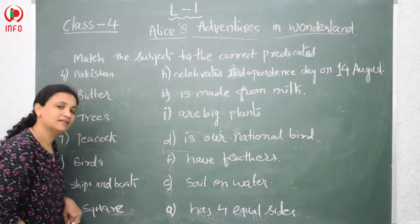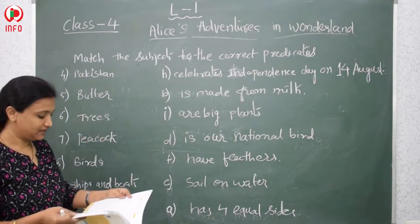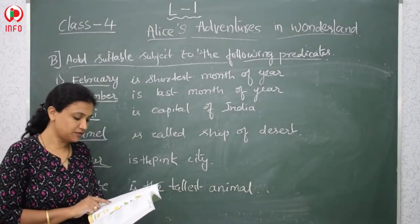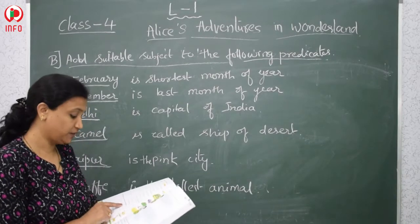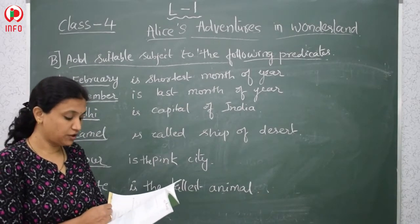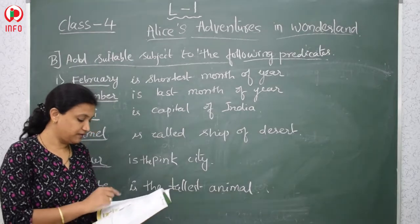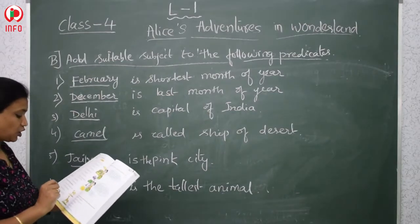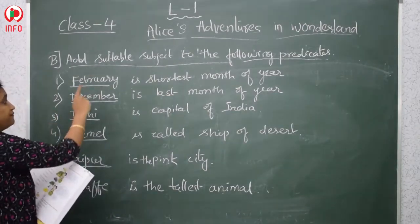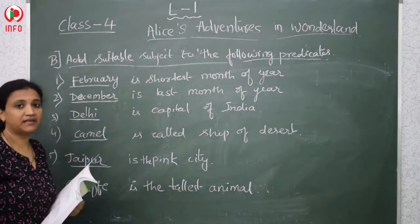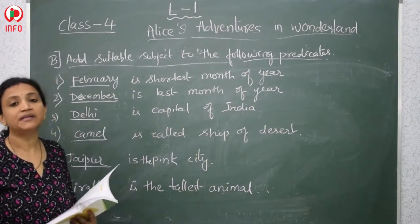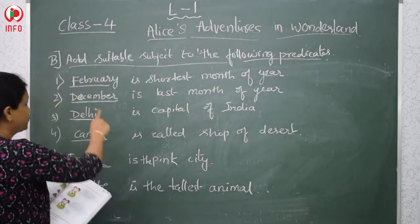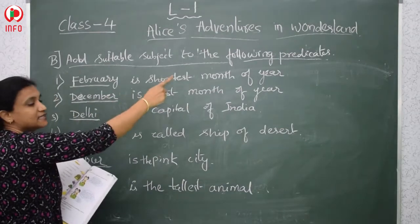Done with this, children. We will see the next part of the grammar now. The next part is: add a suitable subject to the following predicates. We have already seen what predicates are. First: dash is the shortest month of the year. February, because February has only 28 days — or 29 days in a leap year — so February is the shortest month of the year.